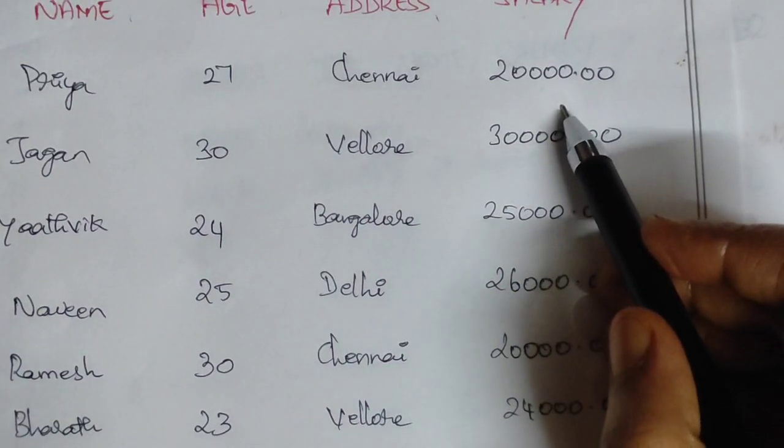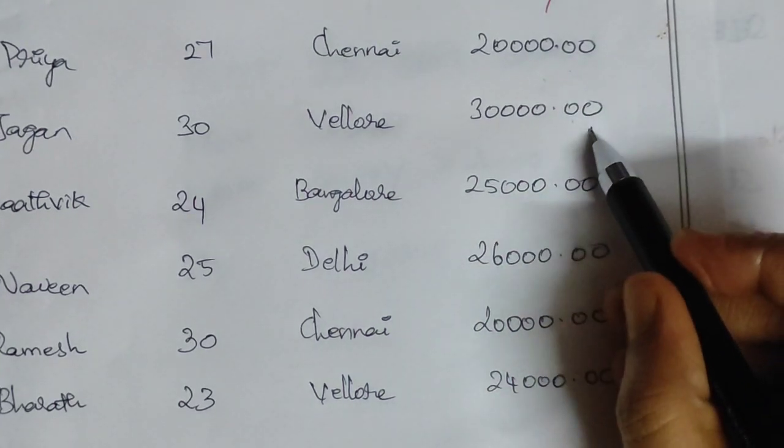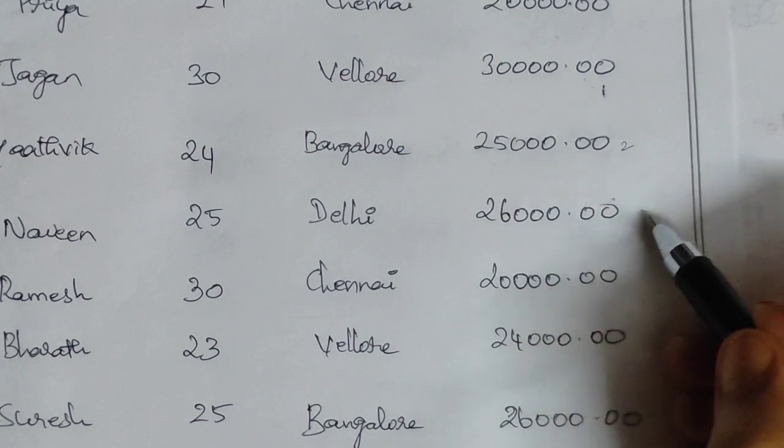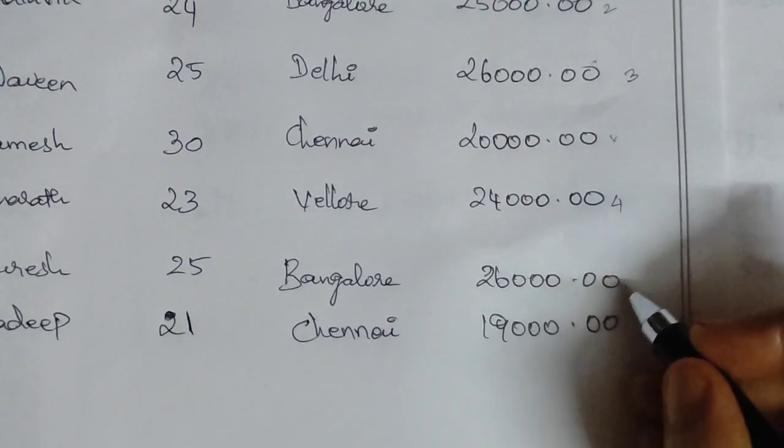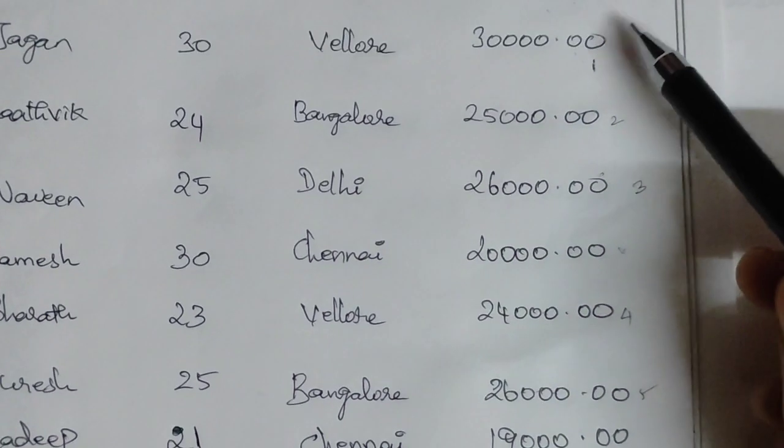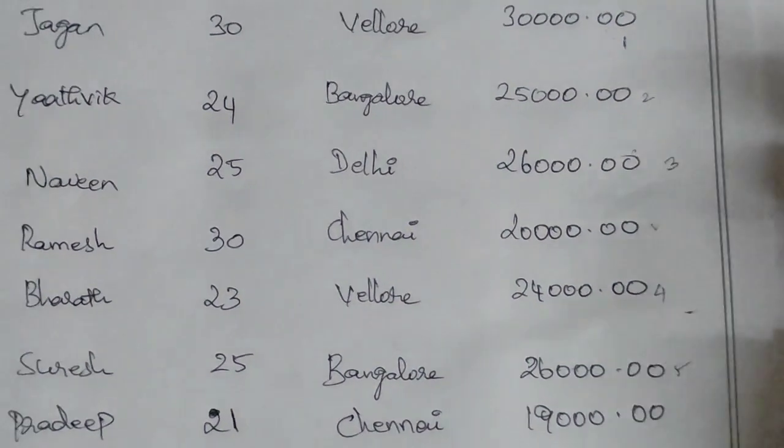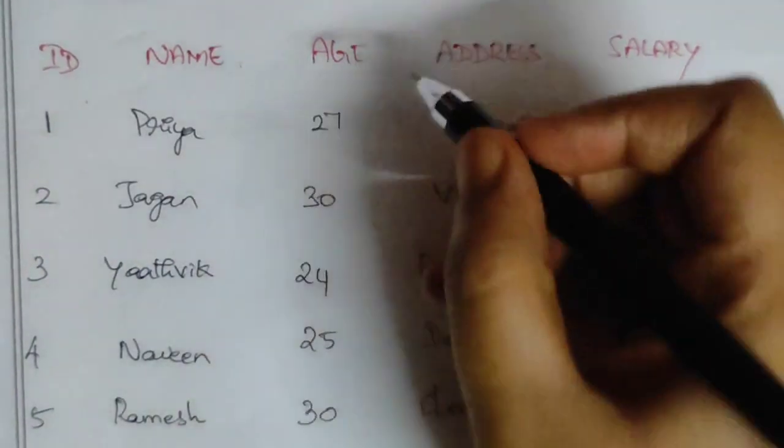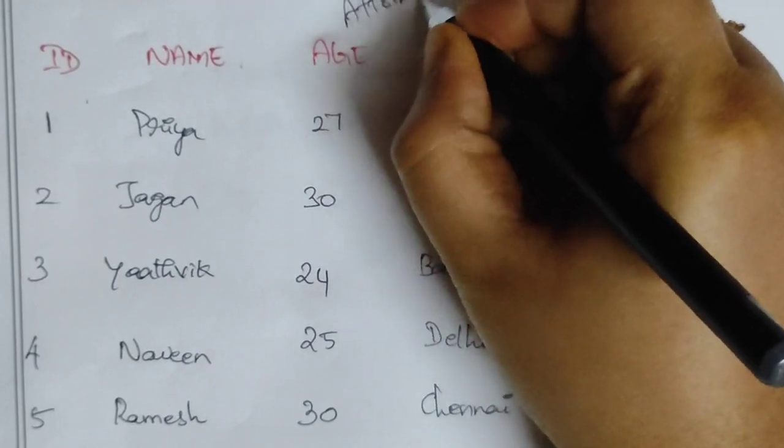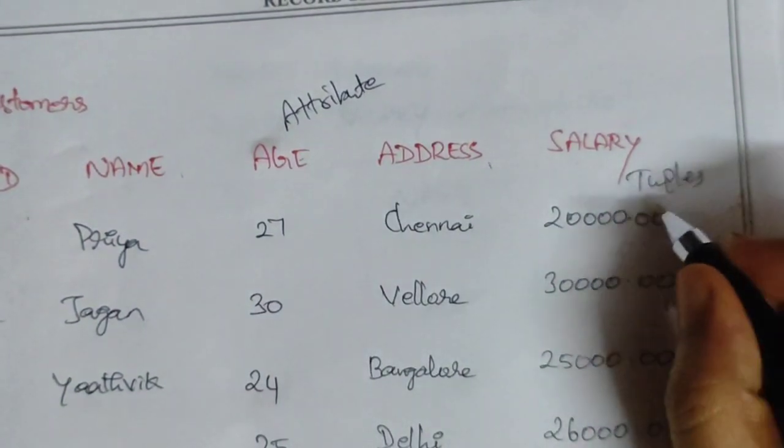Now, ID, Name, Salary - this is the data. This data has salary greater than 20,000. These are the rows. In database keywords, columns are called attributes, and rows are called tuples.